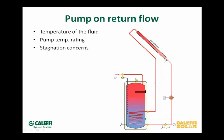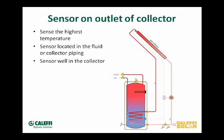Every closed loop system is going to stagnate at some point — a power outage, a component failure, it's going to happen. You might as well plan accordingly and protect yourself and certainly your customers from expensive callbacks. So that's the first mistake: the location of the pump.